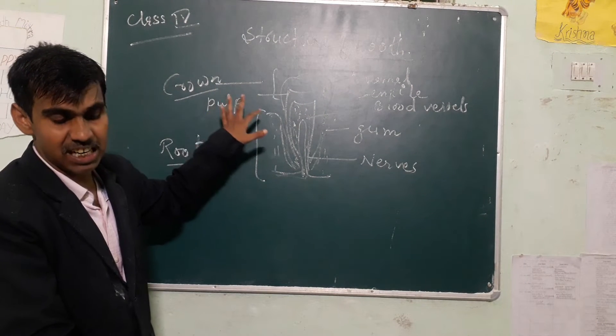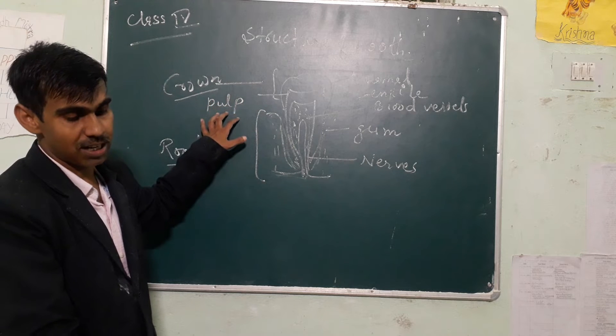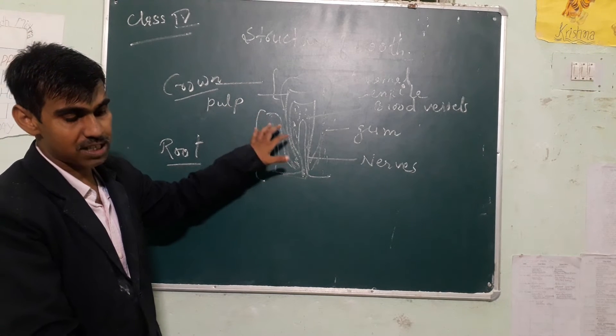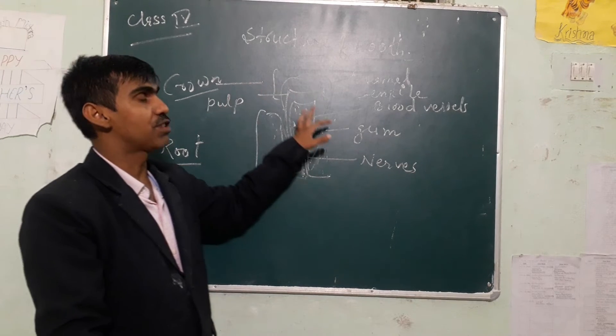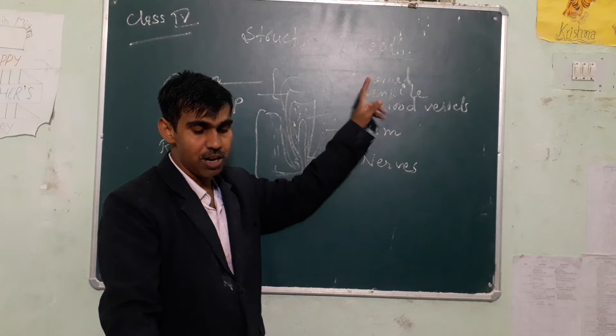The center part is called pulp. Pulp contains the nerves and blood vessels which supply the nutrition to enamel and dentin.